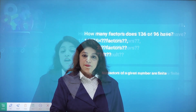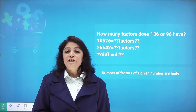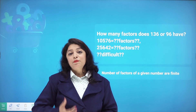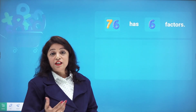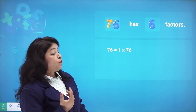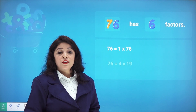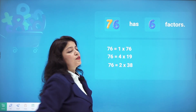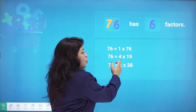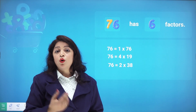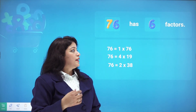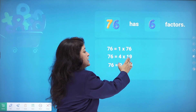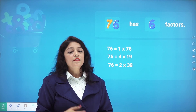Let me find the factors of 726. How many factors does 726 have? We can write 726 as 1 times 726, as 4 times 19 — wait, also as 2 times 38. So the factors are 1, 2, 4, 19, 38, and 726 — that gives six factors in total. So 726 has exactly six factors: 1, 2, 4, 19, 38, and 726.